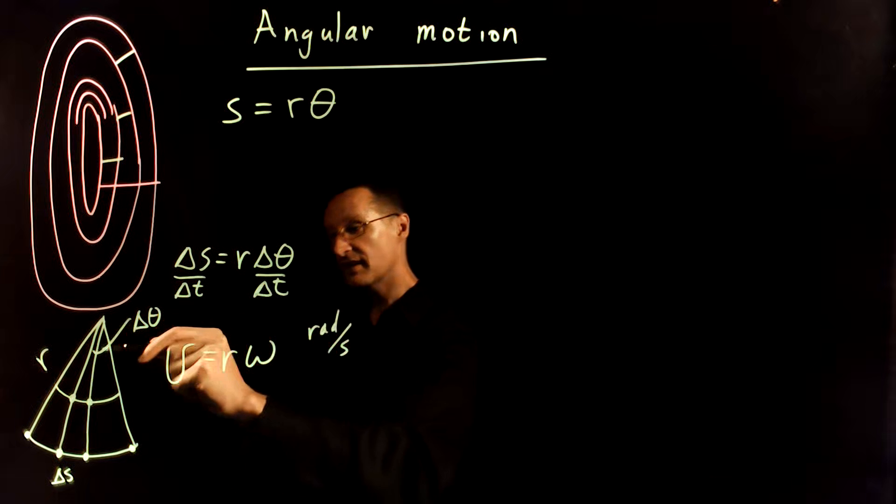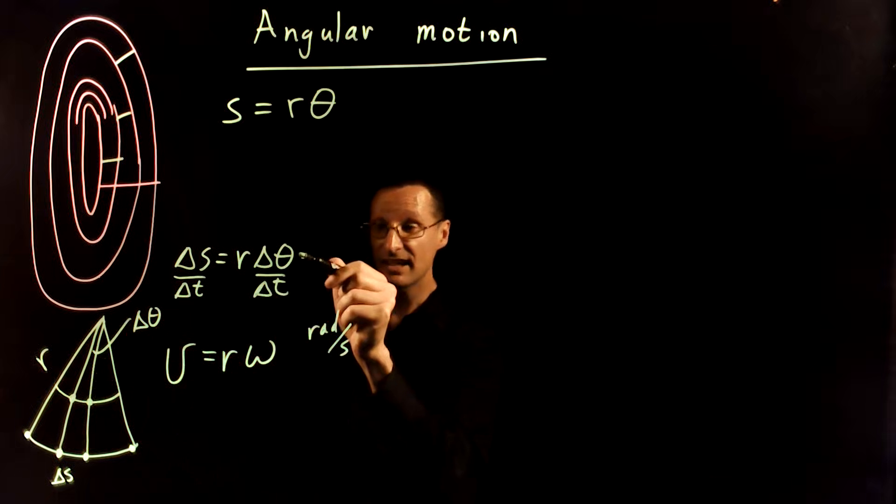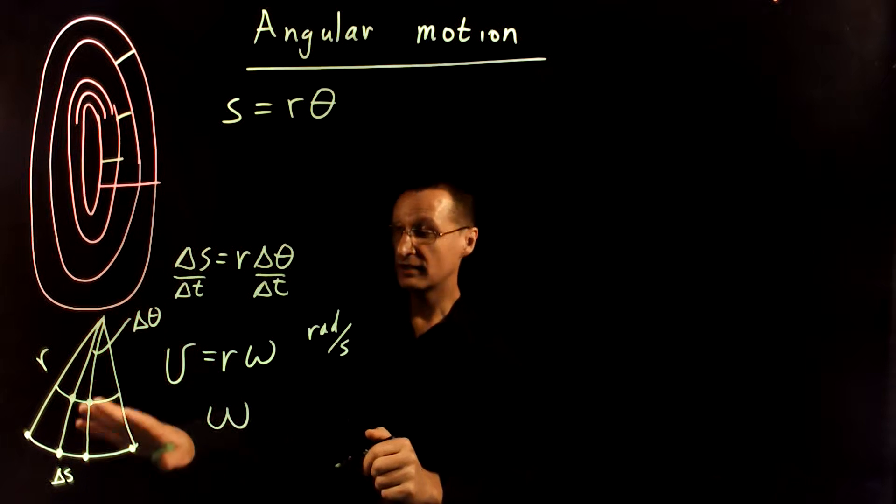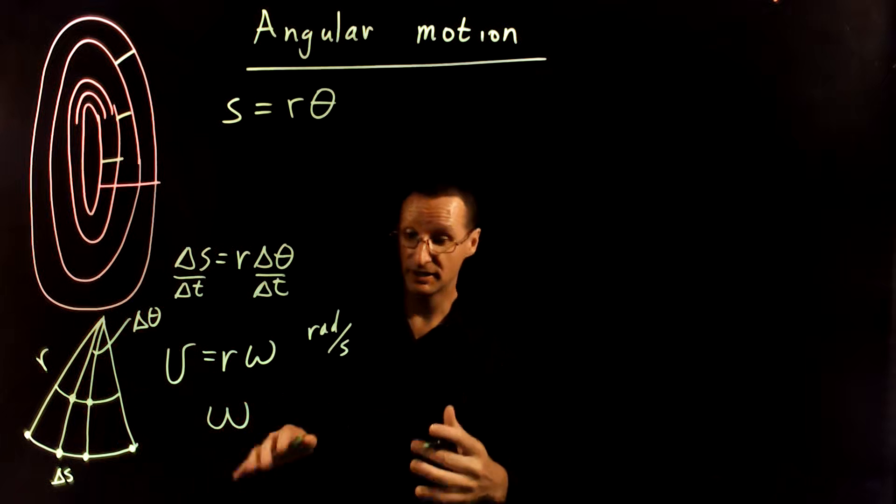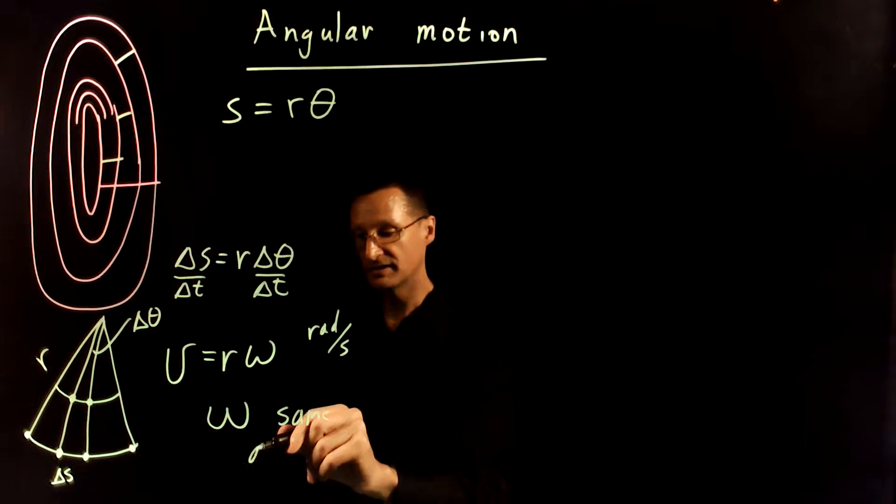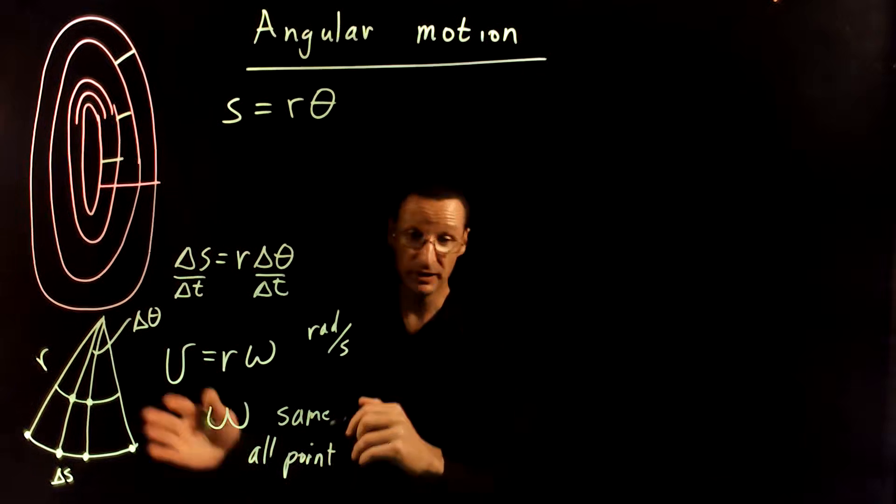However, delta theta for our knee or our foot is the same. And because delta theta is the same, that means omega for points on your leg, as long as you keep it rigid, will be the same for all points on a rigid object that's rotating through some angle.